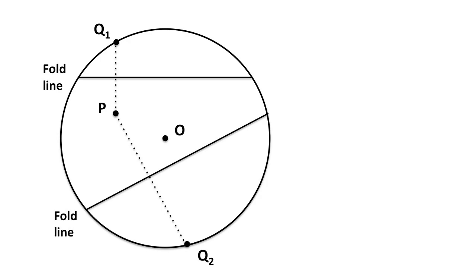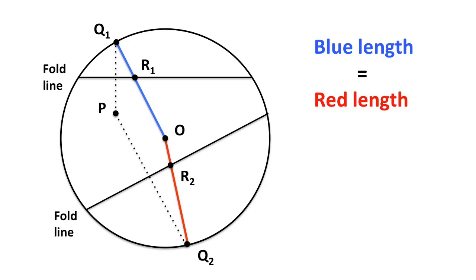Since Q1 and Q2 are on the circle, the length of the blue segment equals the length of the red segment. Now let R1 and R2 denote the points where the colored lines cross the fold lines.